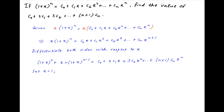Now set x = 1 on both sides. On the left hand side we get 2^n plus n times 2^(n-1). And on the right hand side we get C0 plus 2C1 plus 3C2 plus and so on, plus (n+1)·Cn.